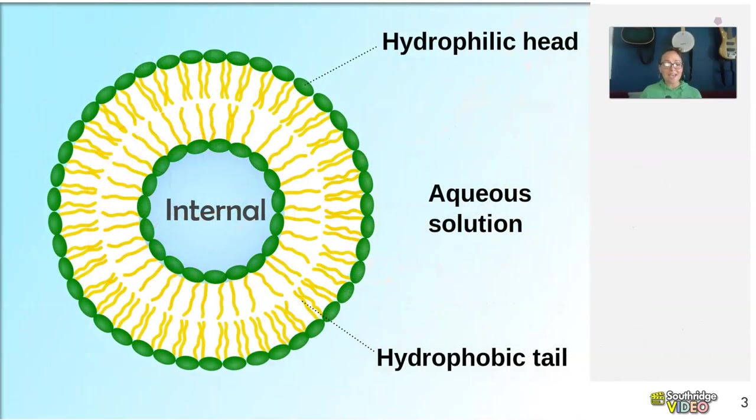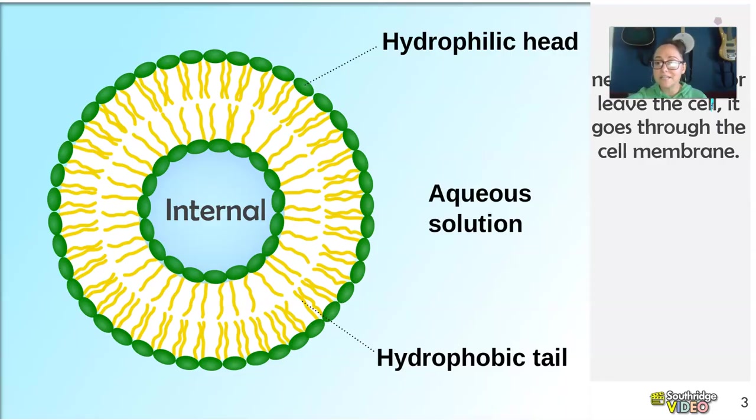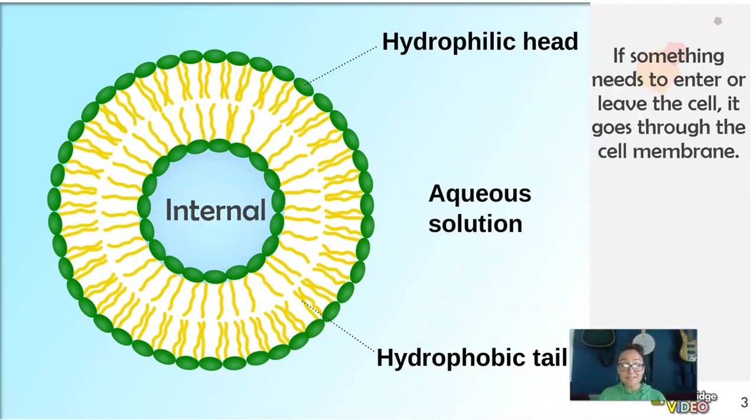When we look at the cell membrane in our cells, it is actually a bilayer, or it has two layers. And that really comes down to because all of our cells are surrounded in water, and the inside of our cells, our cytoplasm, is also aqueous or has water. As we go through the slides, we'll start to see why it comes in two layers.